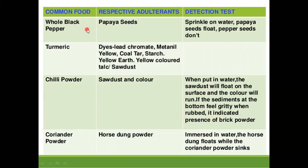Black pepper is sometimes mixed with papaya seeds; sprinkling water causes papaya seeds to float while pepper sinks. Turmeric is adulterated with malachite or methanin yellow coloring agent. Chili powder is mixed with sawdust and color — in water, sawdust floats, color runs, and gritty sediment at the bottom confirms adulteration. Coriander powder is mixed with horse dung powder — in water, horse dung powder floats while coriander powder sinks. These are examples of food adulterations, their adulterants, and detection tests covered in this lecture. Thank you.